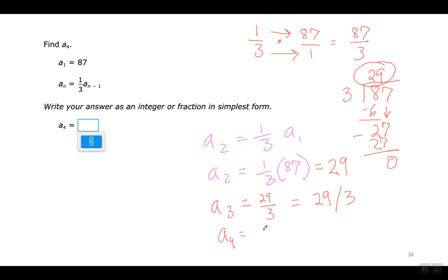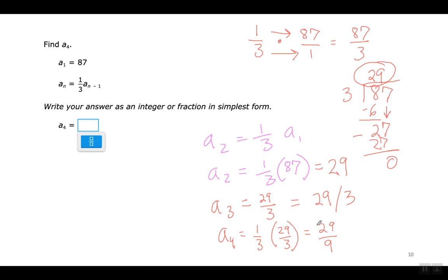For the fourth term, I've got to multiply the one that came before it by 1 over 3 — which is the same as dividing by 3. 1 times 29 is 29; 3 times 3 is 9. Guys, you've got to learn how to use fractions — trust me, it'll make your life a lot easier. Para coger la respuesta aquí, multipliqué el término anterior, que era 29 sobre 3, por 1 sobre 3: 1 por 29 me da 29, y 3 por 3 me da 9. Esa es la respuesta porque ya no se puede simplificar más.